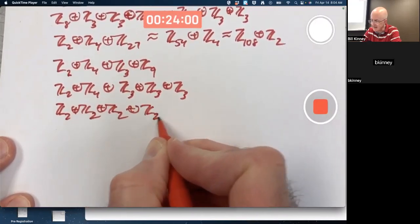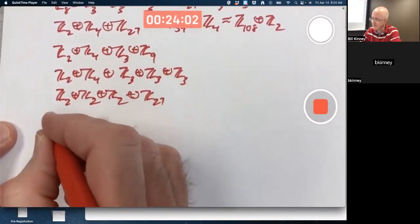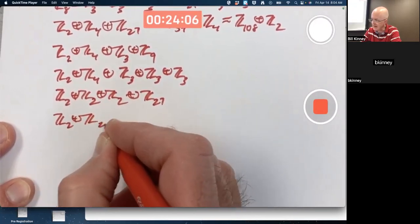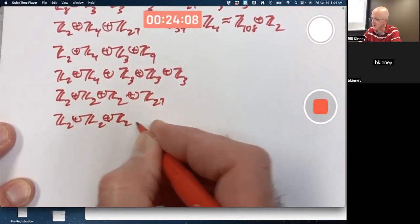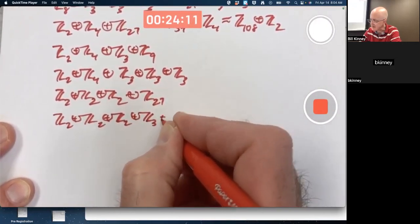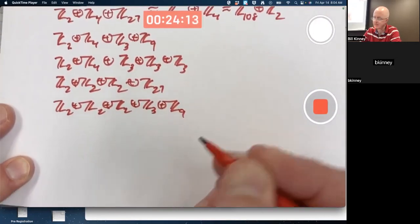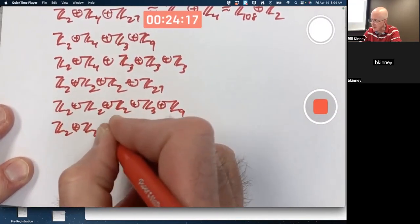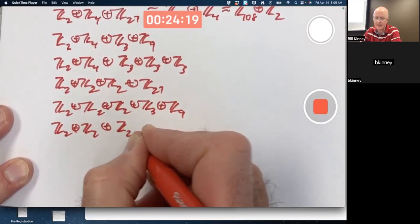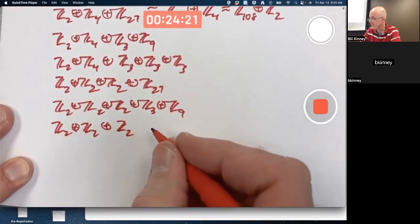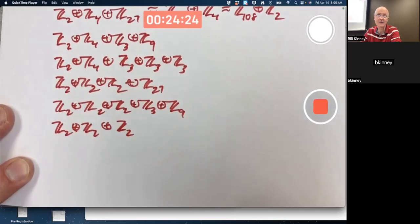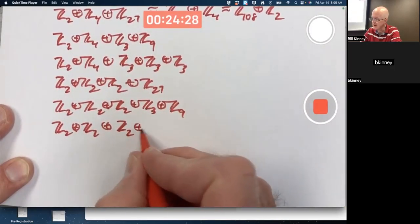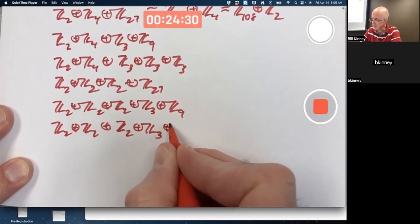If you ended up thinking about it in this way, that's good. If you were more sort of haphazard, well, that's good as well as long as you were able to get the right final answers. Maybe you put the factors that have order powers of three before the ones that were powers of two. Again, it doesn't matter. External direct products commute, so to speak. As we've seen before.